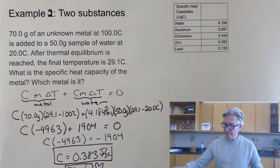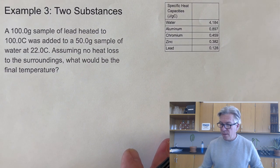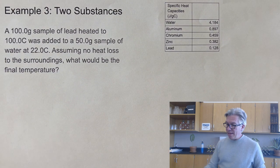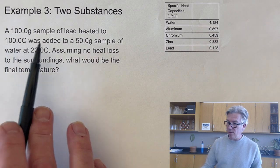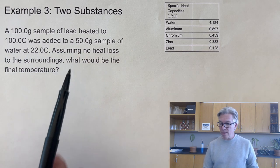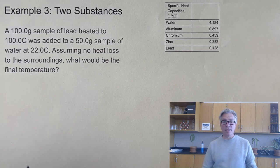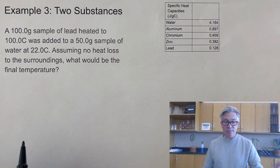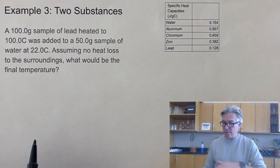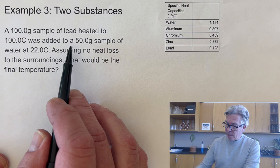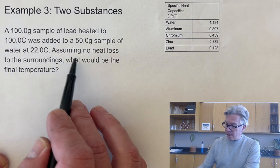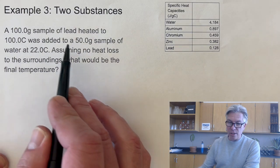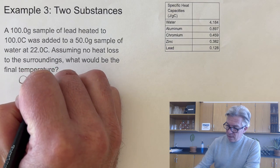Let's do something slightly different. A 100 gram sample of lead heated to 100 degrees Celsius was added to a 50 gram sample of water at 22. Assuming no heat loss to the surroundings, what would be the final temperature? This might be the most difficult one of these that you will see. I definitely see a temperature change and I have two substances, so I'm dealing with the same equation.